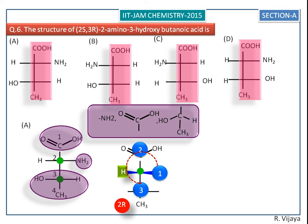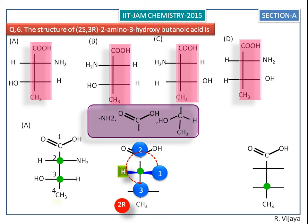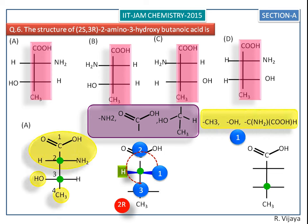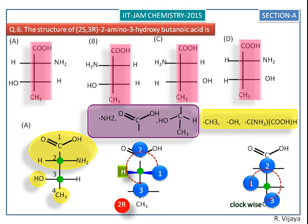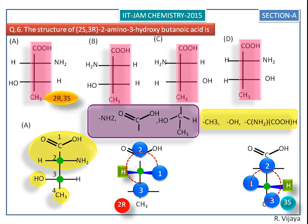So we change the S configuration into R. Next we assign the configuration for the third chiral center. The higher priorities rotate in a clockwise direction, so it is supposed to be 3R, but it is not, because the least priority hydrogen is towards the observer, so we change R into S.